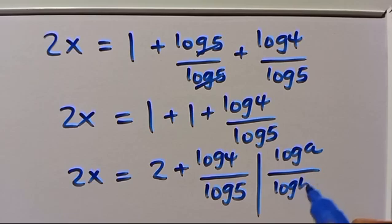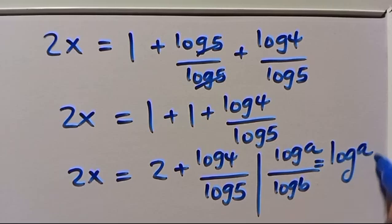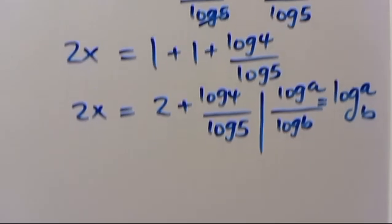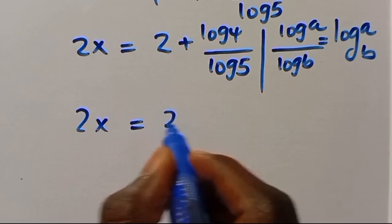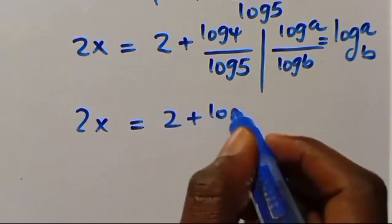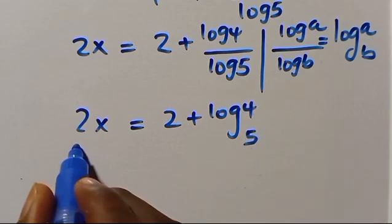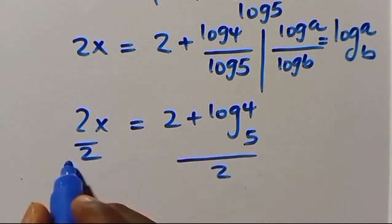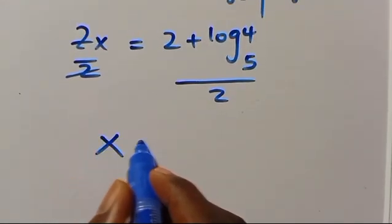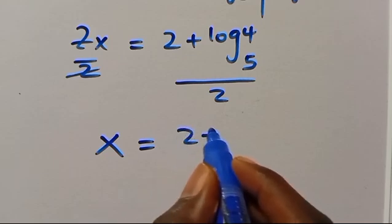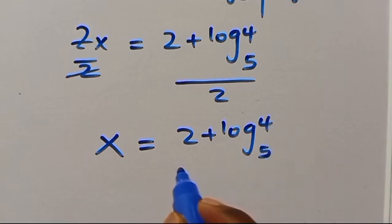Recall that log a over log b equals log a in base b. So from here we have 2x equals 2 plus log 4 in base 5. Dividing both sides by 2, the 2s cancel out and we have x equals 2 plus log 4 in base 5, all over 2.